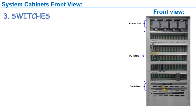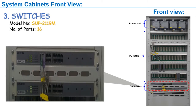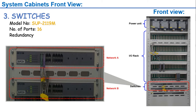The third section in the front view of the system cabinet is the switches. The model number of the switch is SUP211 9M — it is a 16-port, 19-inch rack-mounted switch. Switches in the system cabinet are normally in redundancy mode; the first switch is called network A and the second is network B.